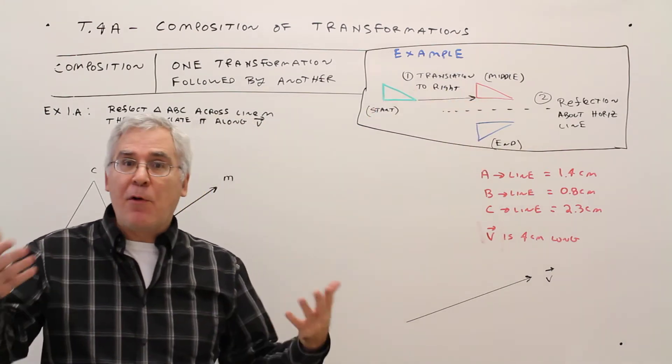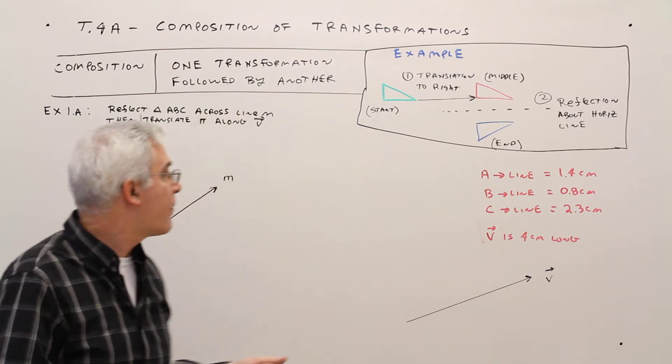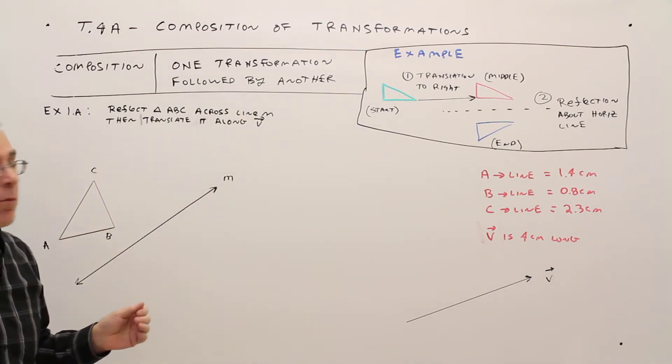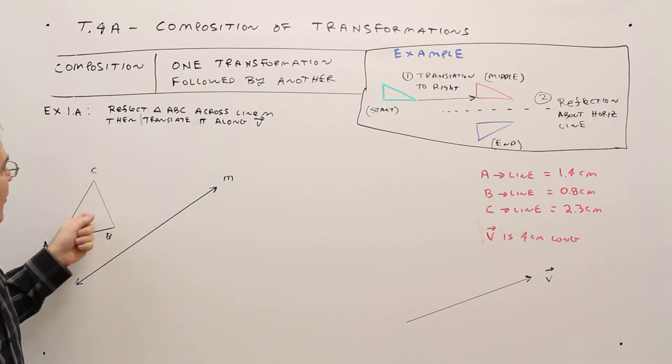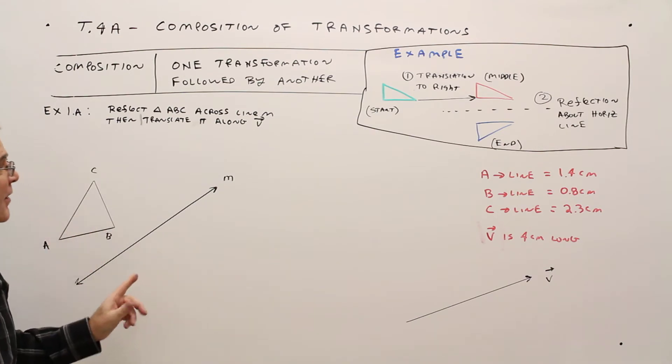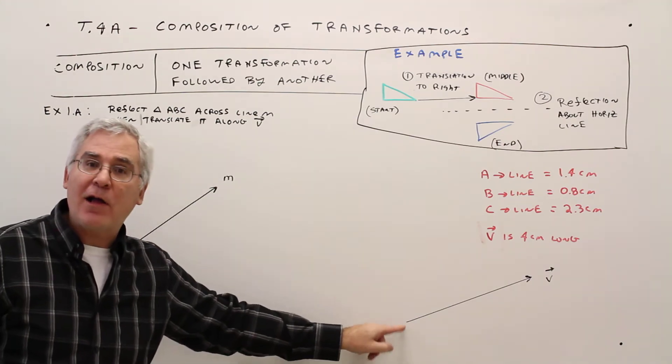And there could be multiple different transformations going on. Okay, so here's example 1a. Reflect triangle ABC across line M, and after that, translate it along vector V.